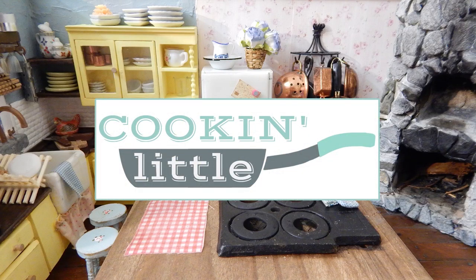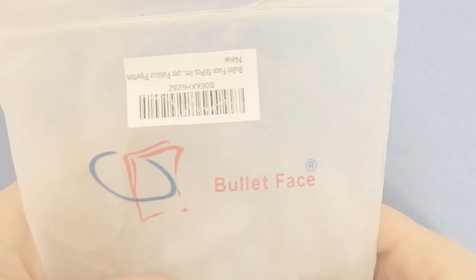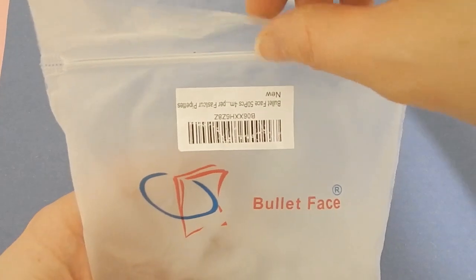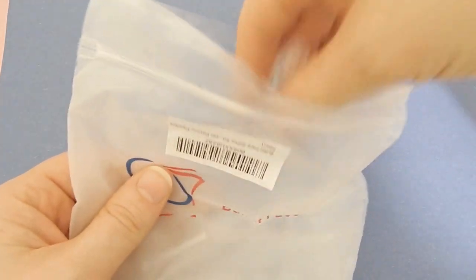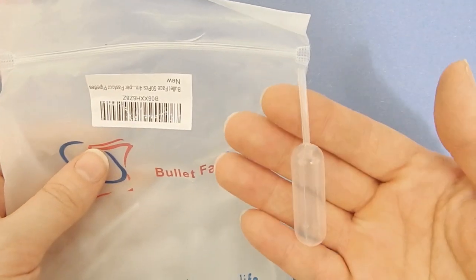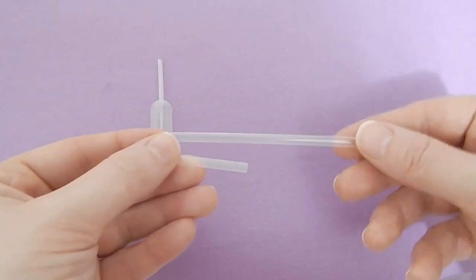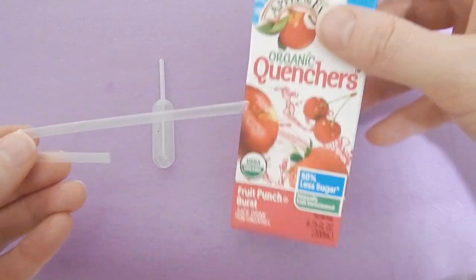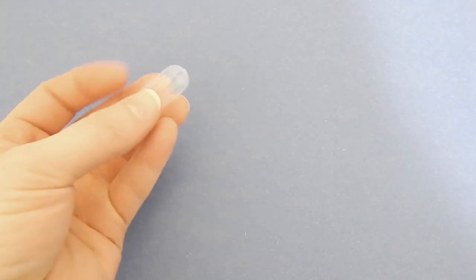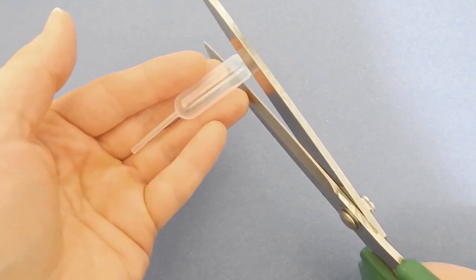Hi, welcome to Cookin Little. Today I'm going to be making a working miniature wine bottle. I'm using these plastic pipettes and a clear plastic straw that you can find on juice boxes. I'm just going to cut the bottom off.